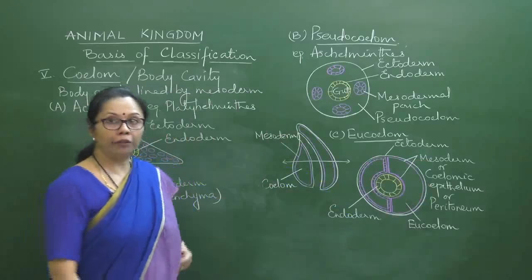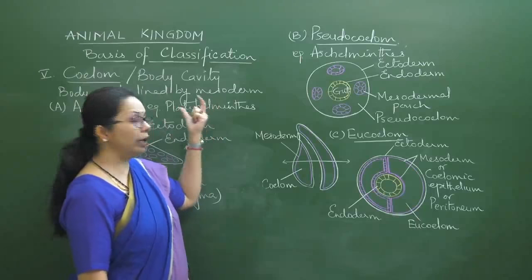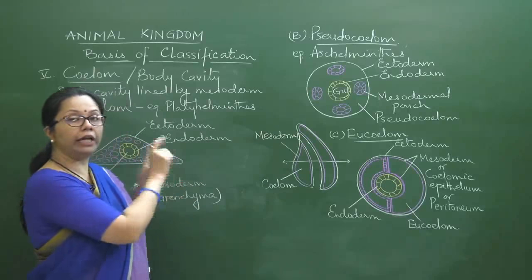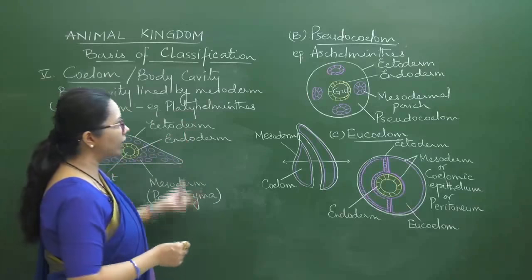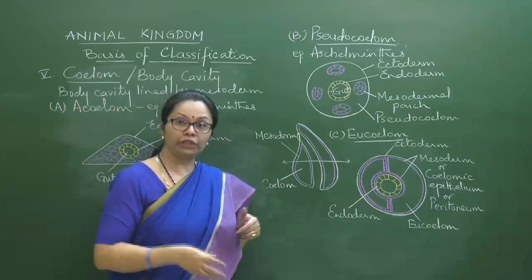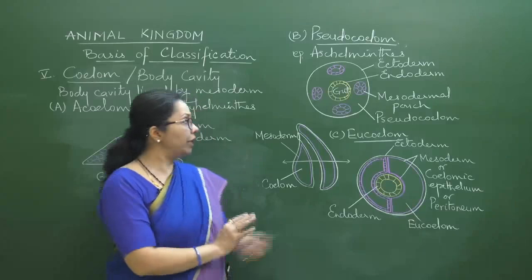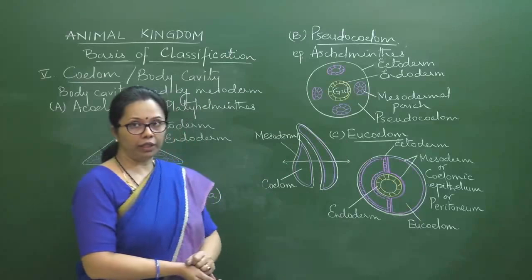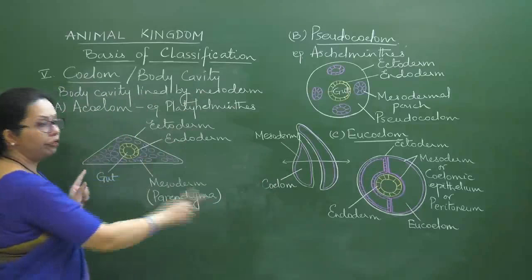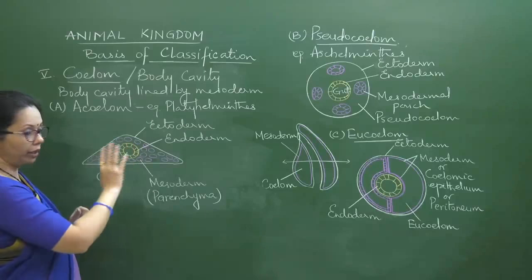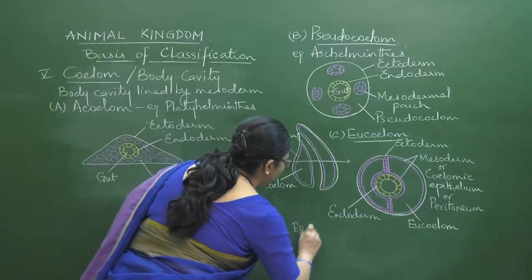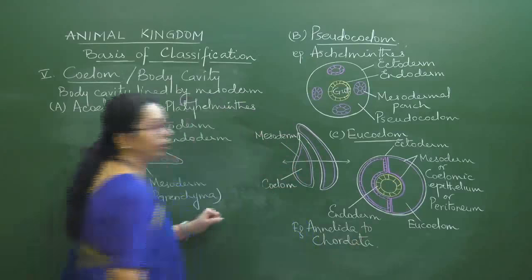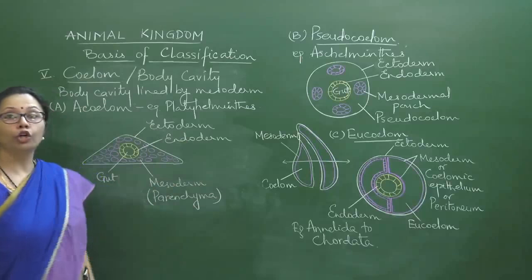Eucoelomate examples include Annelida through Chordata — Annelida, Arthropoda, Mollusca, Echinodermata, Hemichordata, and Chordata. The eucoelom can be of two types based on how it develops embryonically. One is schizocoelom and the other is enterocoelom. These two types are studied through embryology, not visible in the adult cross-section.